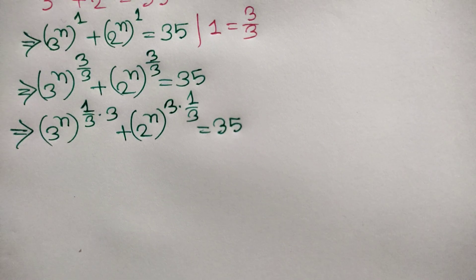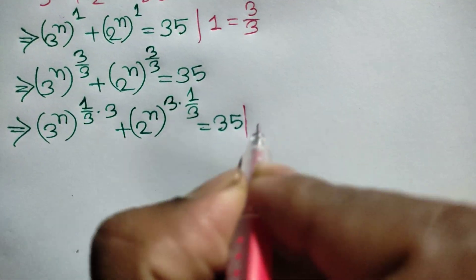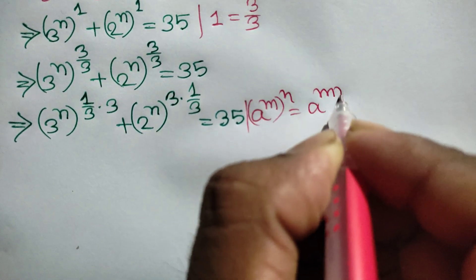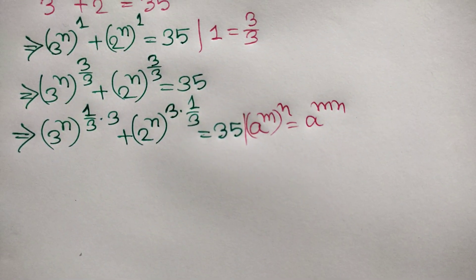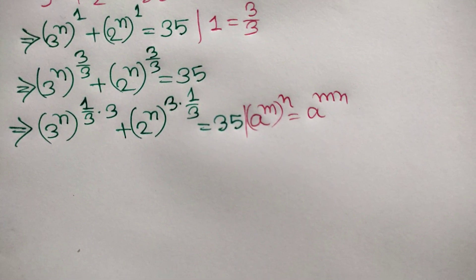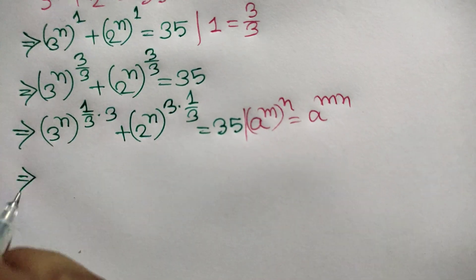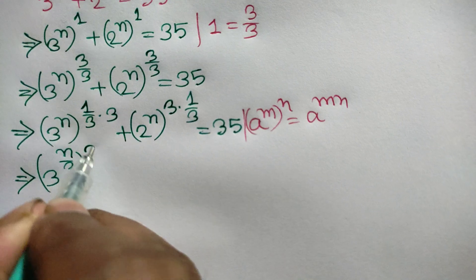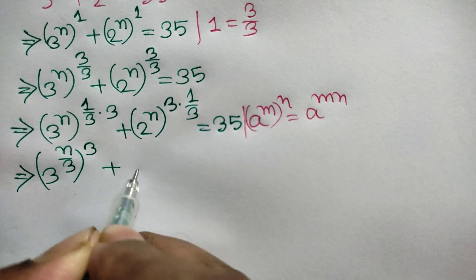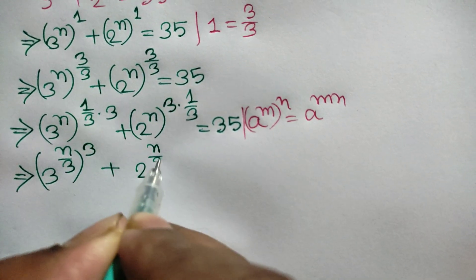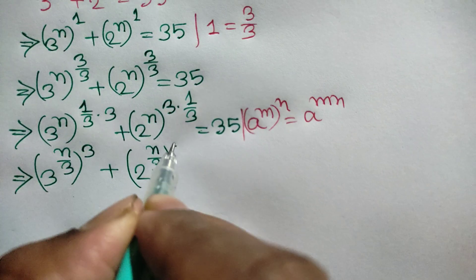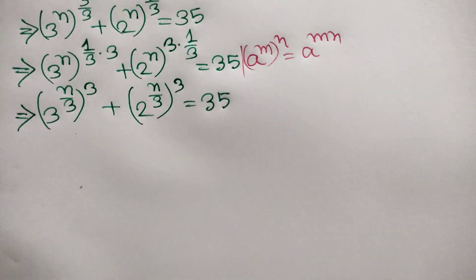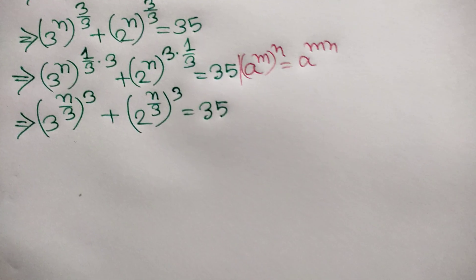We know that a to the power m whole to the power n is equal to a to the power m times n. Applying this rule, we can write 3 to the power n over 3 whole to the power 3 plus 2 to the power n over 3 whole to the power 3 is equal to 35.